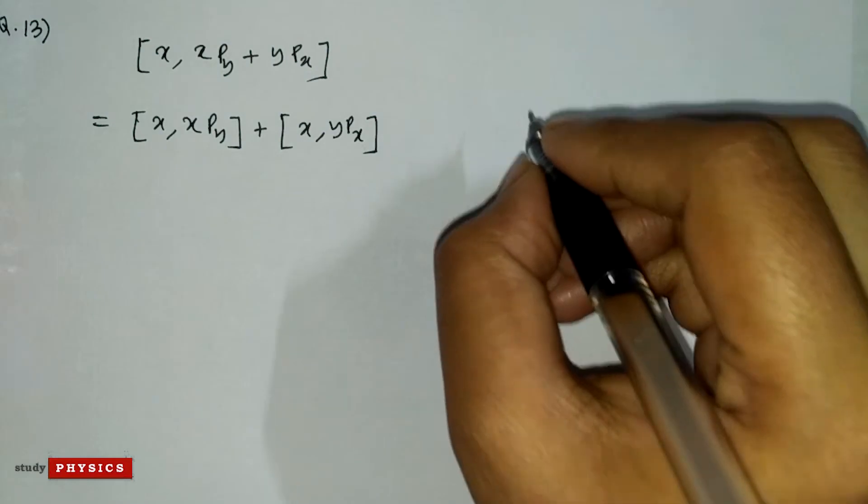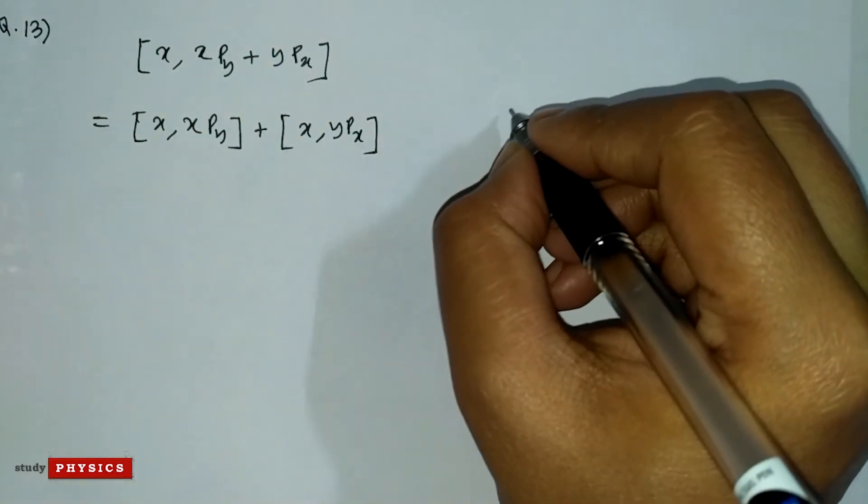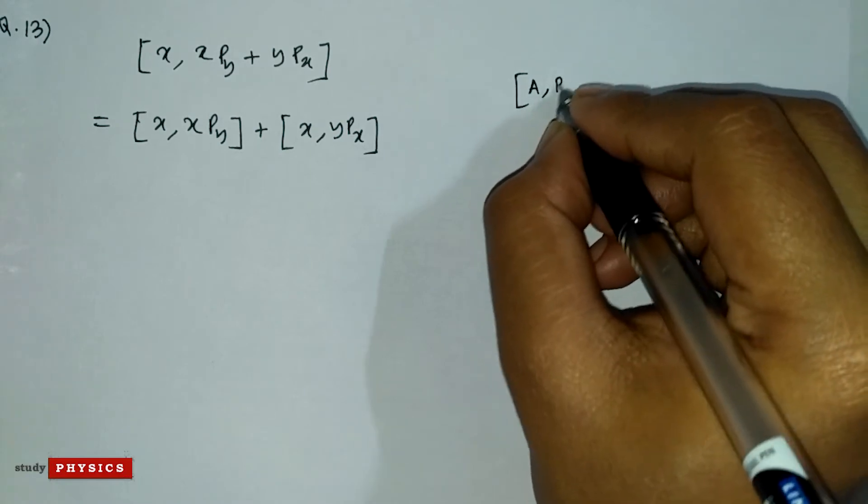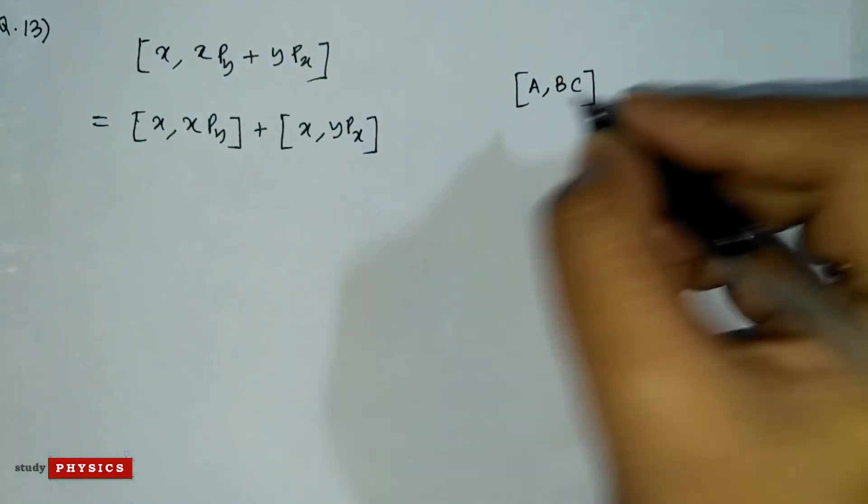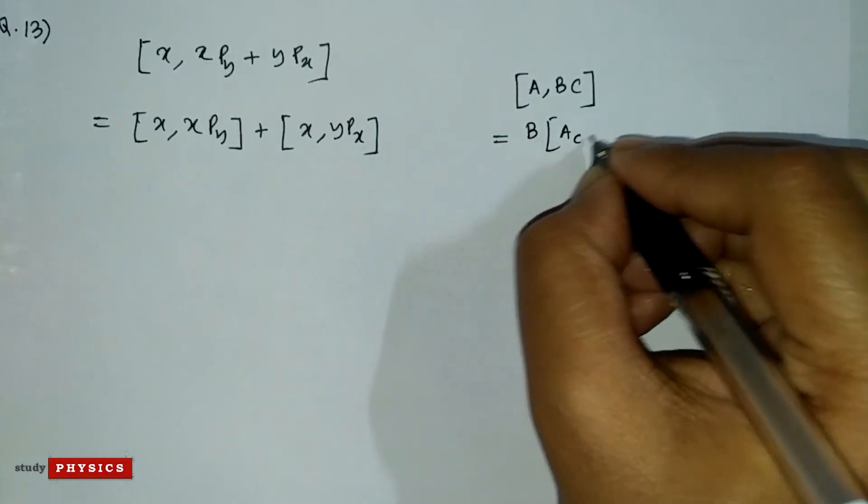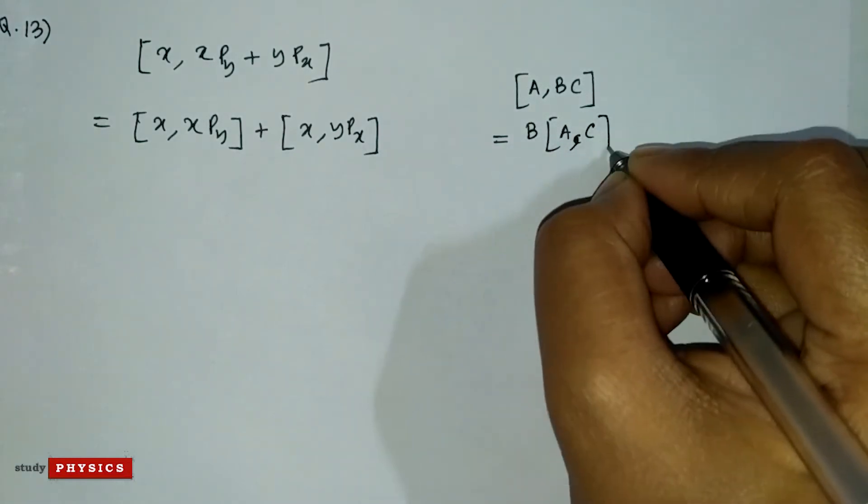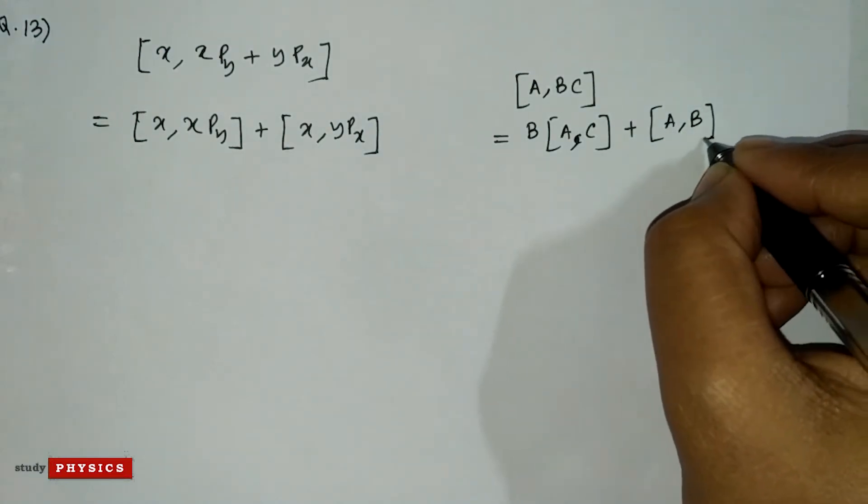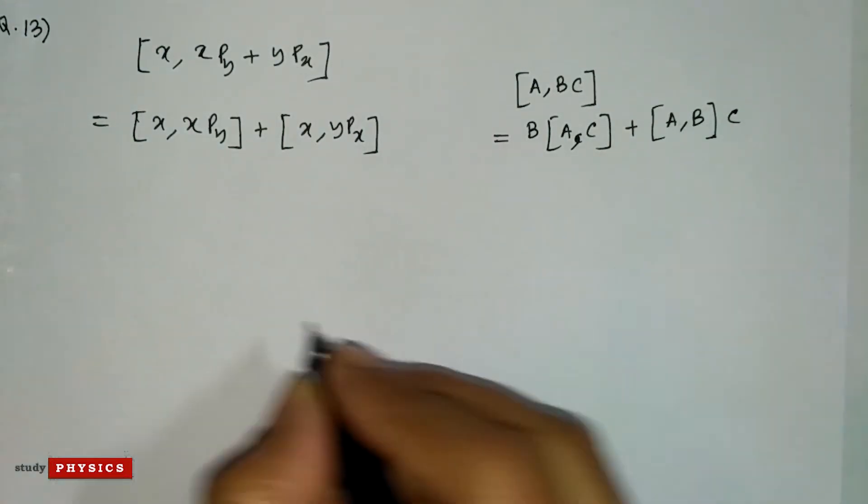From Poisson bracket properties, we know that if the Poisson bracket is [a, bc], then we can write this as b[a, c] + [a, b]c. We'll just use this property.